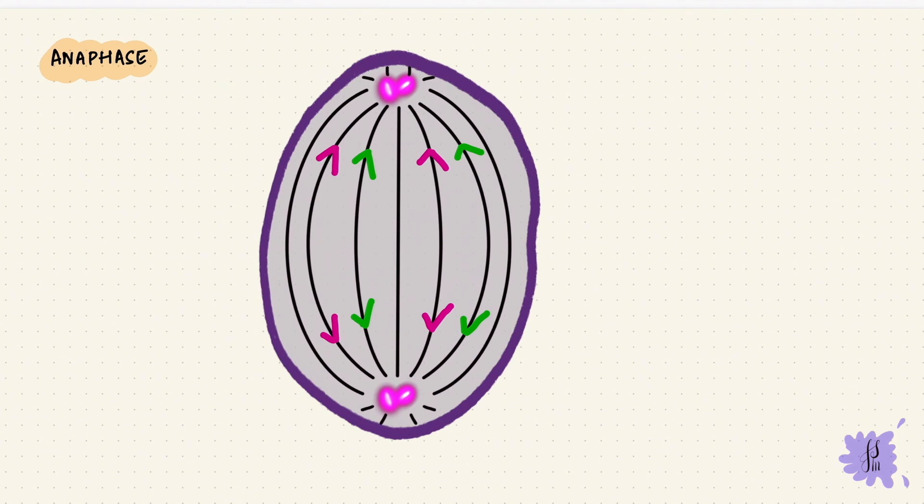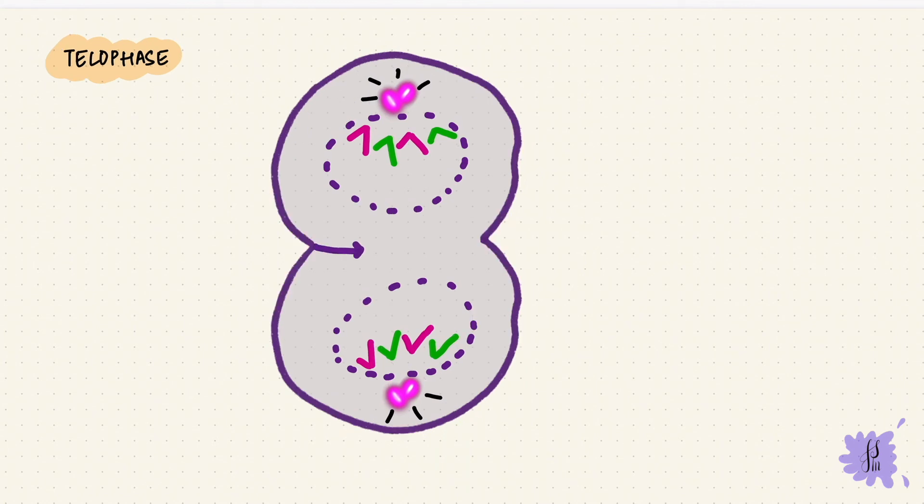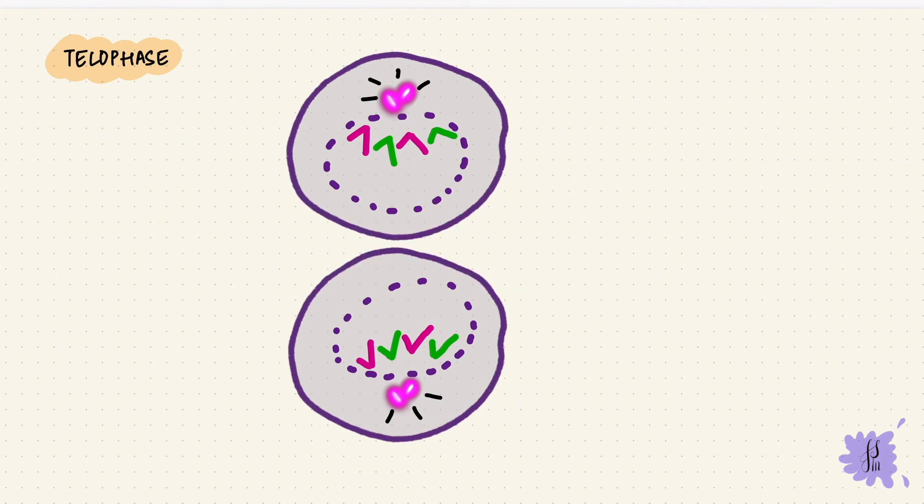They reach the opposite poles of the cell during the telophase. The spindles disappear. The nuclear membrane starts forming around these chromatids. Now between the two newly forming cells, there is a contractile ring. This is from microfilaments. They form this cleavage furrow and the cytoplasm divides. This is cytokinesis. It starts around late anaphase, but gets completed after telophase. The chromosomes are going to uncoil and lengthen and become less visible again.